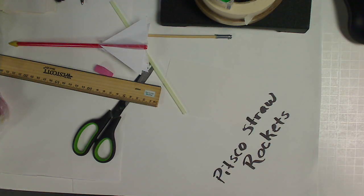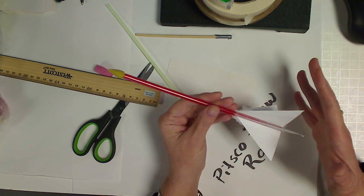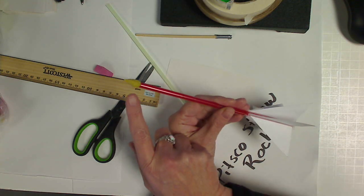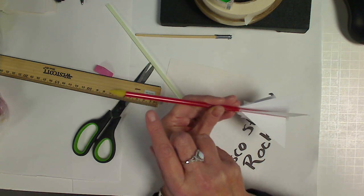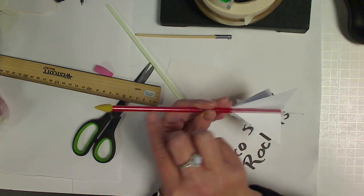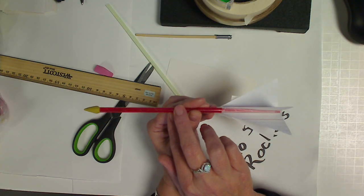There are a few things that we absolutely have to have in order to make this. As we look at our rocket, we can see that there are three main components. We have a cone, right now this one is made out of clay. We have the tube or the body of the rocket, which is a straw, just a plain drinking straw.